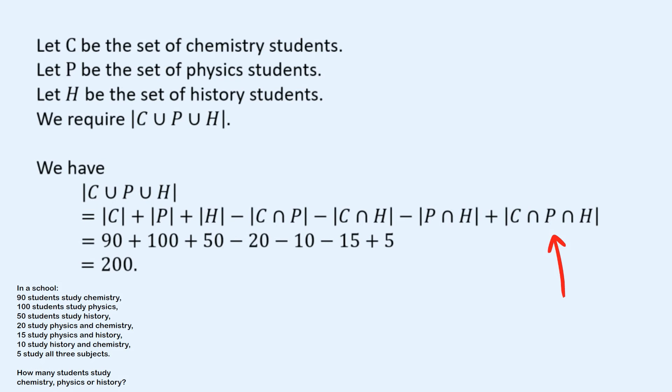And I'm given all of those numbers in the problem, so I can just add it all up, 90 plus 100 plus 50, and so on, and that gives me 200.